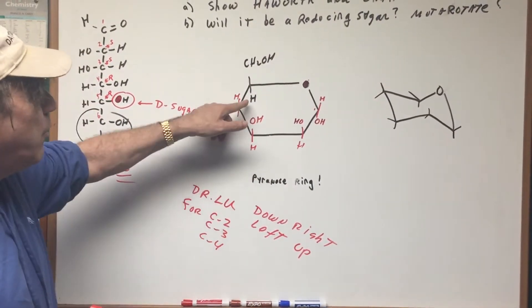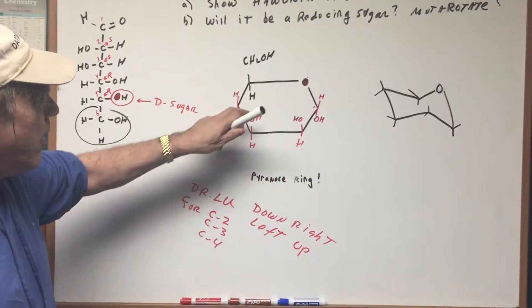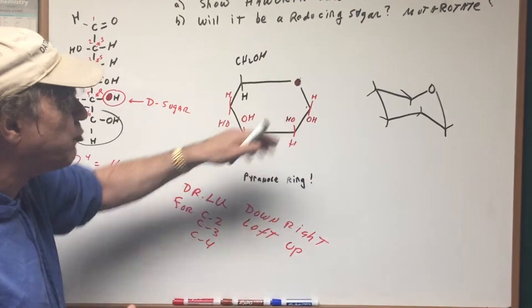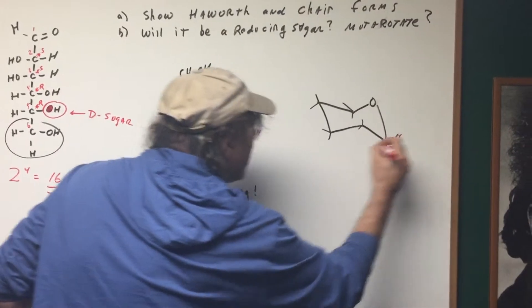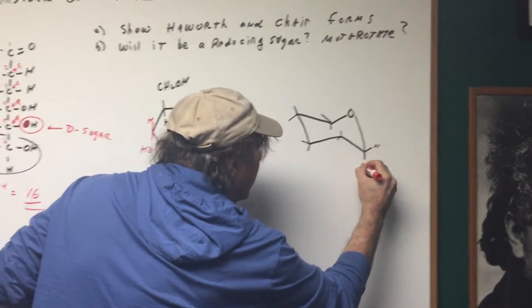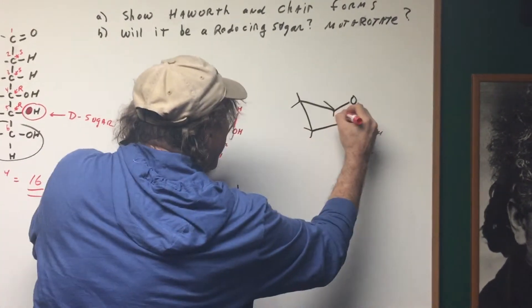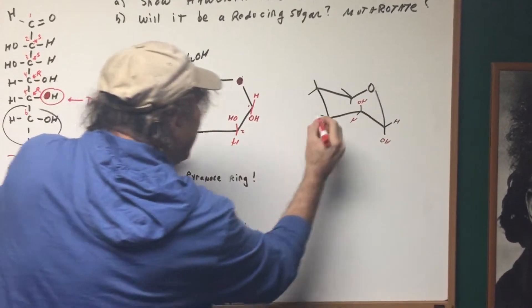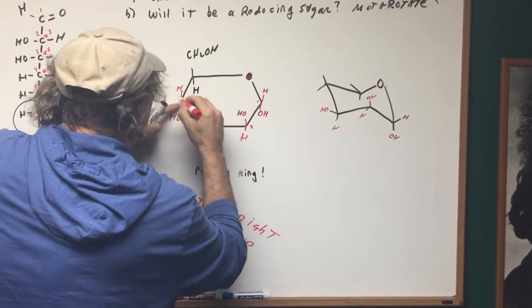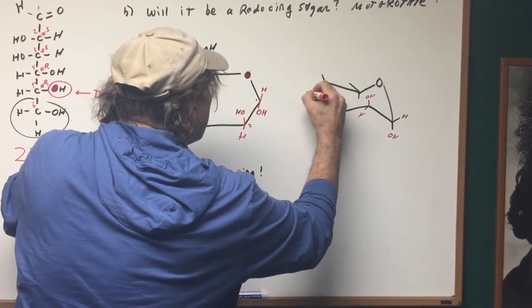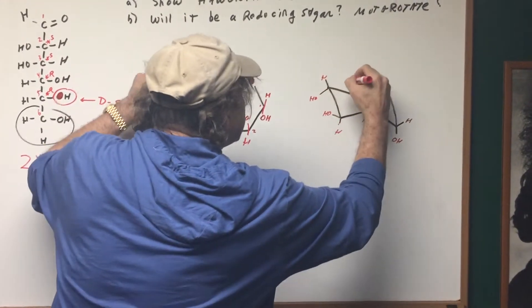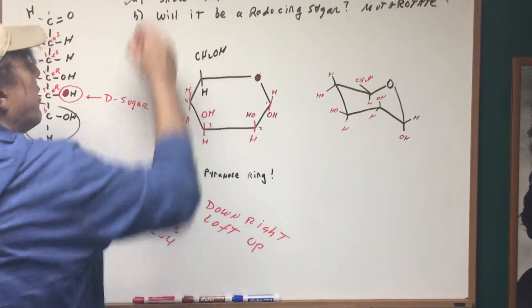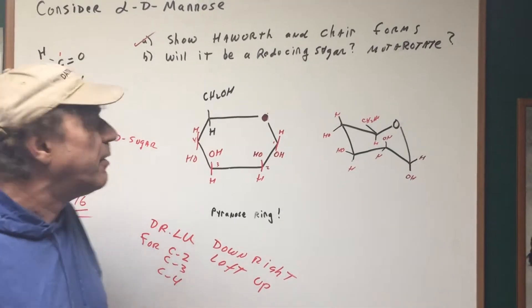If it was an L sugar, it would have been placed going down. Now to go from the Haworth into the chair form, all you do is basically transcribe. You see, this is the H at one, the OH is underneath. You go to position two, the OH is above, like this, and then position number three, OH is up. Position number four, OH is down. And then finally, this is up, like such. Now, that takes care of how you will convert from one form here into another.